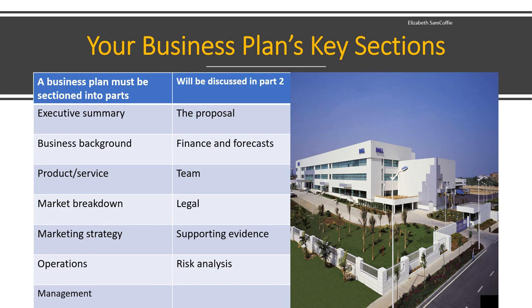The sections of a business plan will be discussed in part two of this video. The sections include: executive summary, your business background, the proposal, what product or service you want to sell, your finance and forecasts, your team, your market breakdown, the section you are in within that market, the legal section, the marketing strategy section, your supporting evidence, your operations, your management, and the risk analysis of the business you're wanting to start.